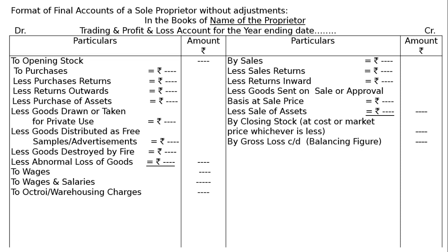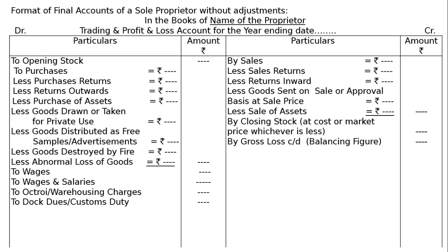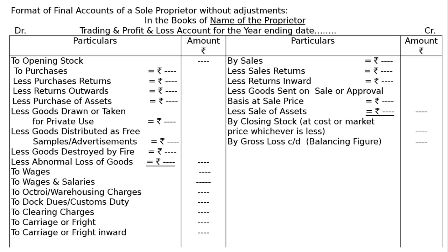Then 'to octroi and warehousing charges.' Next, dock duties and customs duties — applicable when goods are brought through a seaport, airport, or across border roadways between countries. Then 'to clearing charges' — paid when goods are cleared at airports, seaports, or roadways between countries. Next is 'to carriers or freight inward' — also called carriers or cartage inward.